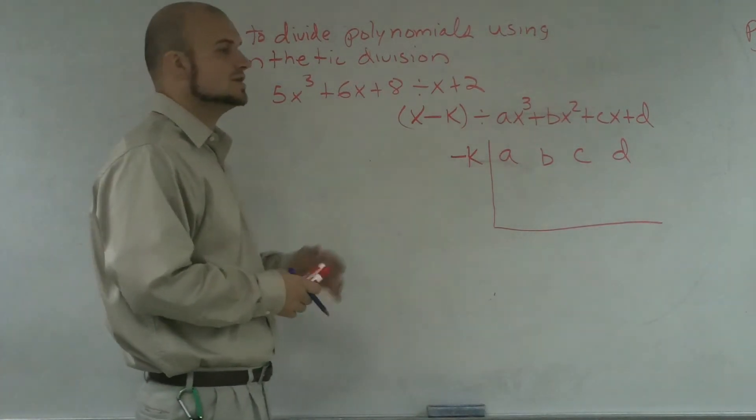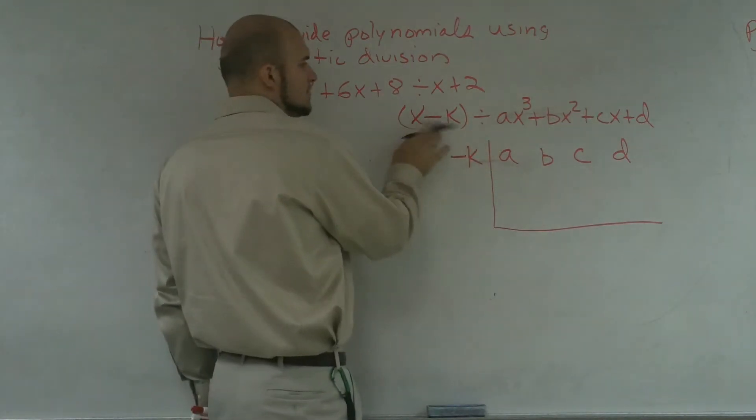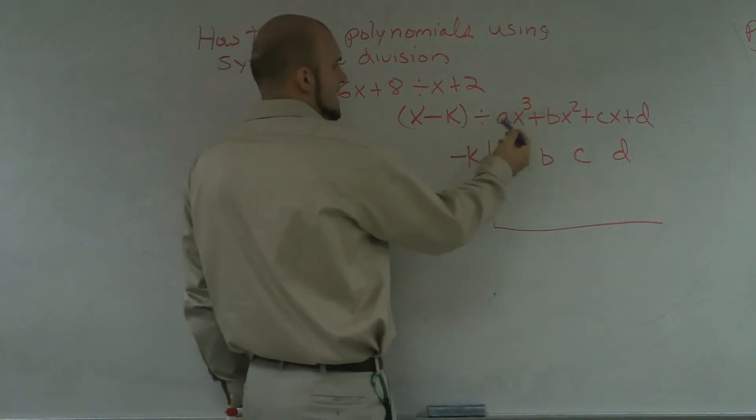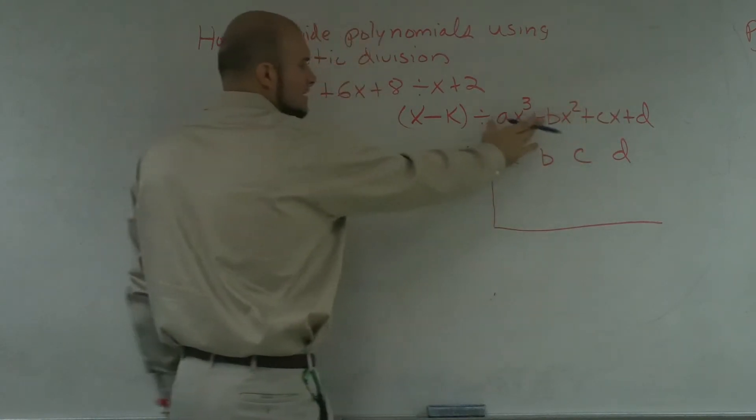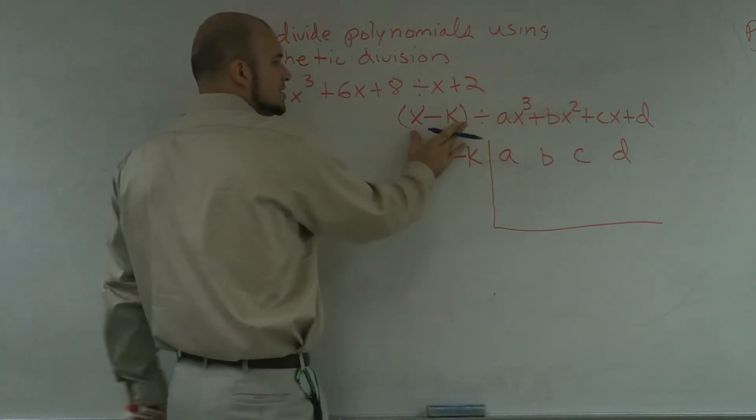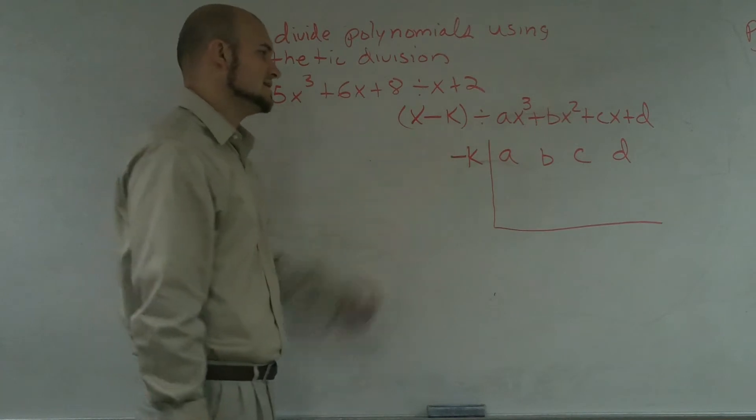However, you can only use it when you have a polynomial in the form of x minus k and then ax cubed plus bx squared plus cx plus d. So you have a regular polynomial, but then you have to have this polynomial, your divisor, as x minus k.